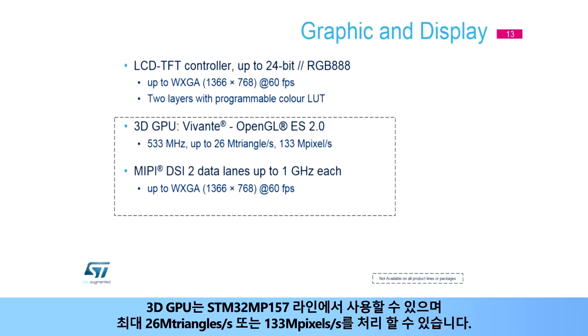A 3D GPU is available on the STM32 MP157 line and can process up to 26 megatriangles per second or 133 megapixels per second.